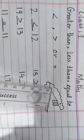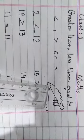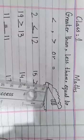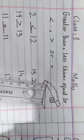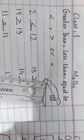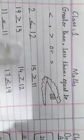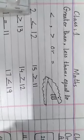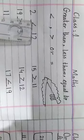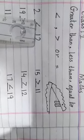This is a crocodile mouth. The crocodile always wants the big number — the crocodile always eats big numbers. Let's start the question: 2 and 12. The crocodile opens his mouth on the side of the big number.